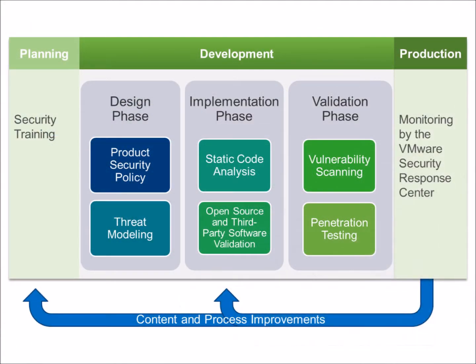This category has nine controls, and the first is called Secure Development Policy. To ensure that developers develop secure software and consider security as a major requirement equal to performance and availability, a policy should be developed and implemented setting the rules for all developments in an organization.